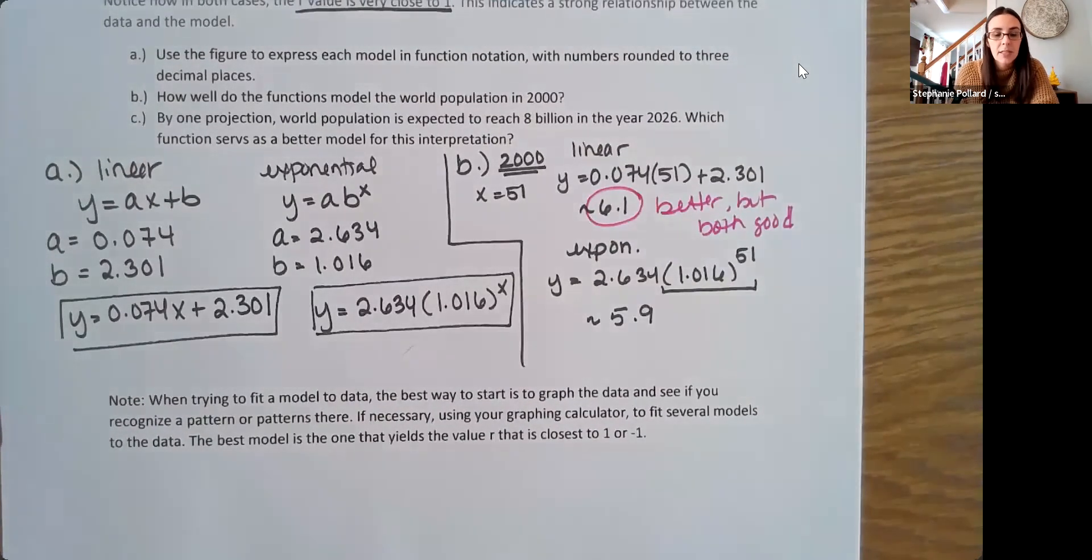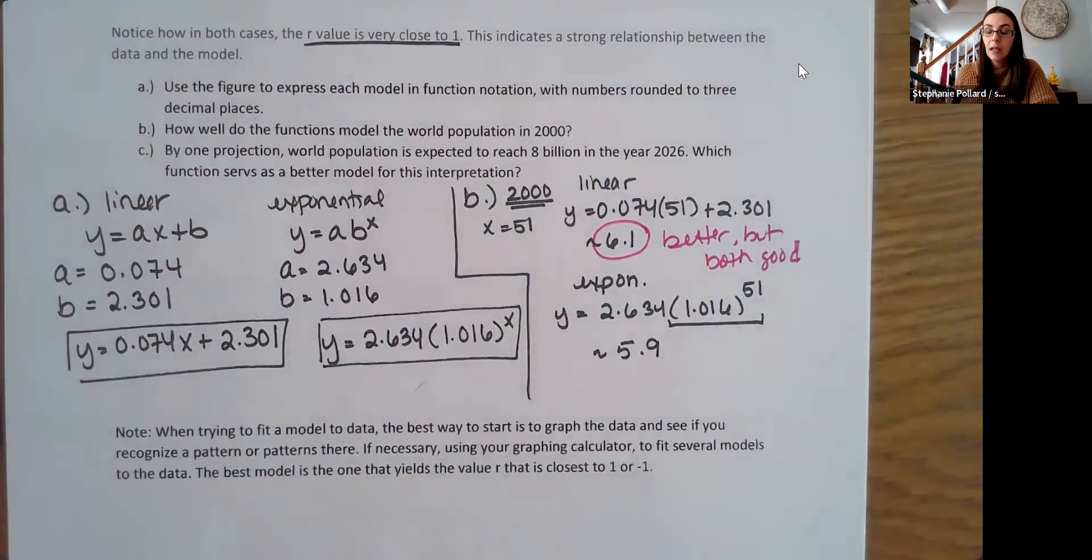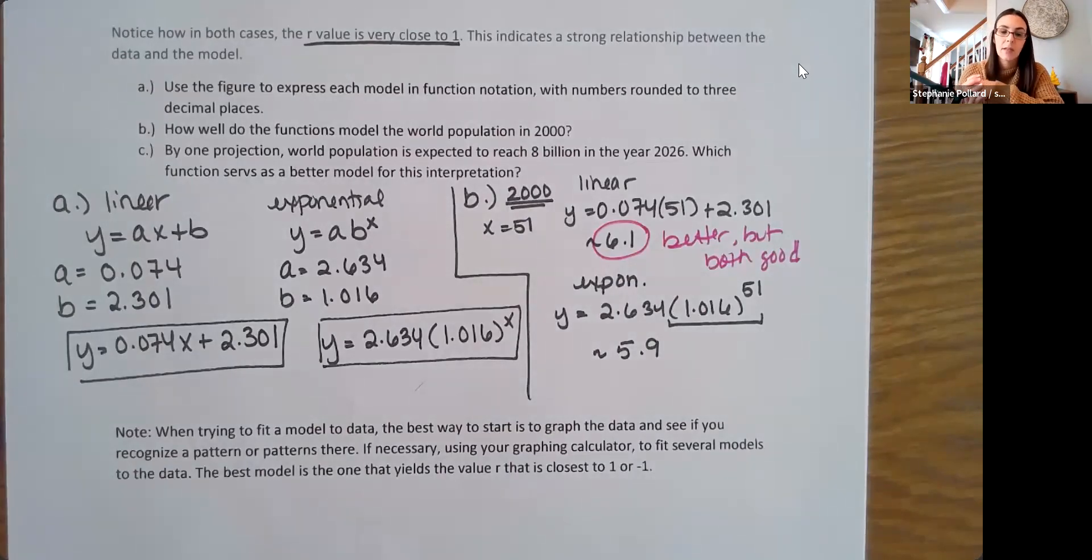And like I mentioned, when trying to fit a model to data, the best way to start is to graph that data. See if you can recognize a pattern or patterns there. And then if necessary, use your graphing calculator to fit several models to the data. So here, there were kind of two models that we were thinking could be, and we used our calculator to figure out both models. Both ended up being very, very good. But it looks like that linear model is just a little bit better. So the best model is the one that yields the R value that is either closest to positive 1 or negative 1.